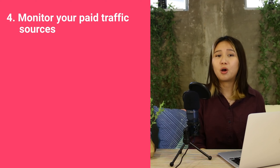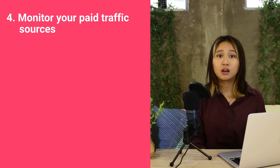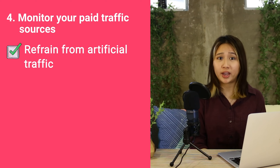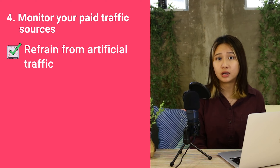And number four, monitor your traffic sources. Artificial traffic is a surefire way to get your AdSense account suspended. The responsibility lies on the website owner to monitor this. This can be easily achieved by setting up a Google Analytics account so that you can monitor, track, and analyze your traffic sources.